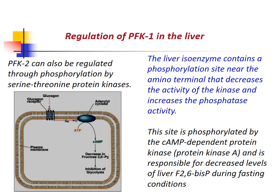Regulation of PFK1 in the liver: The liver isoenzyme contains a phosphorylation site near the amino terminus that decreases kinase activity and increases phosphatase activity. This site is phosphorylated by cyclic AMP-dependent protein kinase and is responsible for decreased levels of fructose-2,6-bisphosphate during fasting. PFK2 can also be regulated through phosphorylation by serine/threonine protein kinases.